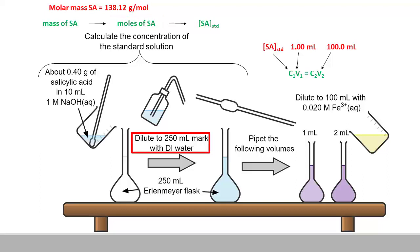Given that this amount is dissolved in 250 milliliters or 0.2500 liters of solution, you can calculate the concentration of this initial standard salicylic acid solution.